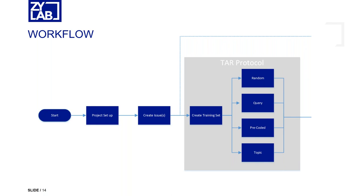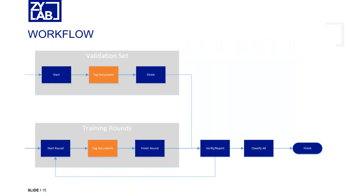We first create a training set because we need to train the computer on the documents. We can start with a fully random training set, where it just picks some documents from your complete data set for you to classify. You can also do this based on a query — the advantage being that the query can immediately find some responsive documents, saving time in teaching the system. For quality assurance purposes, you can use pre-coded documents or existing coding from a data set. You can also create a training set from a topic identified through topic modeling.